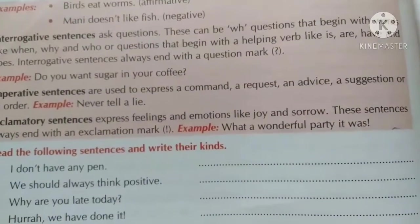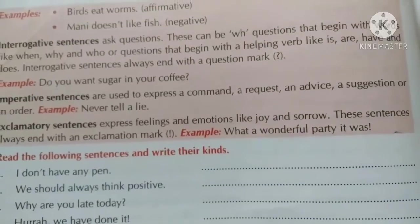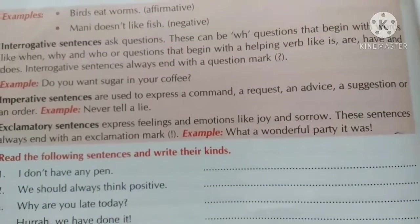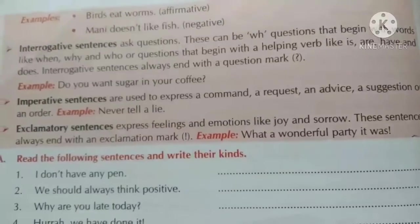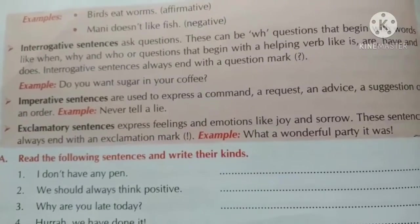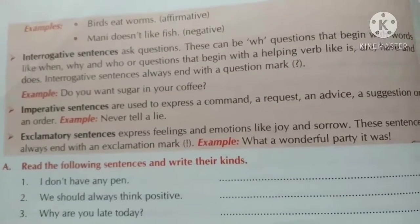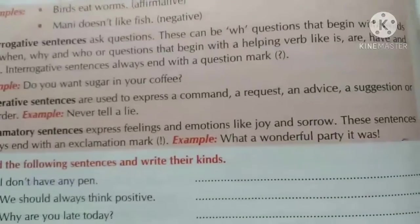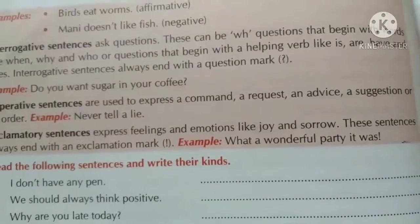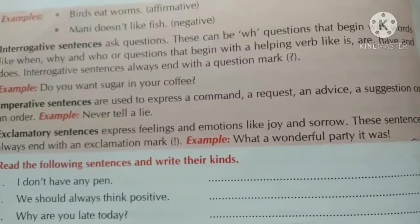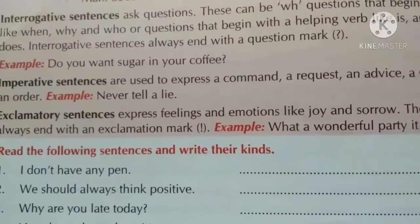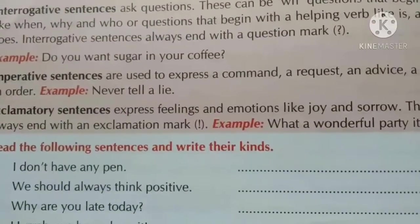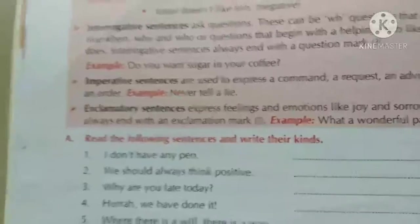Uske baad exclamatory sentence. It expresses feelings and emotions. Jo apne feelings ko — woh sare sentences mein aata hai — usko exclamatory sentence bola jata hai. Like joy, sorrow, happiness, sadness. Aur end mein hamesha exclamation mark aata hai. Toh ye sara ho gaya types of sentences.